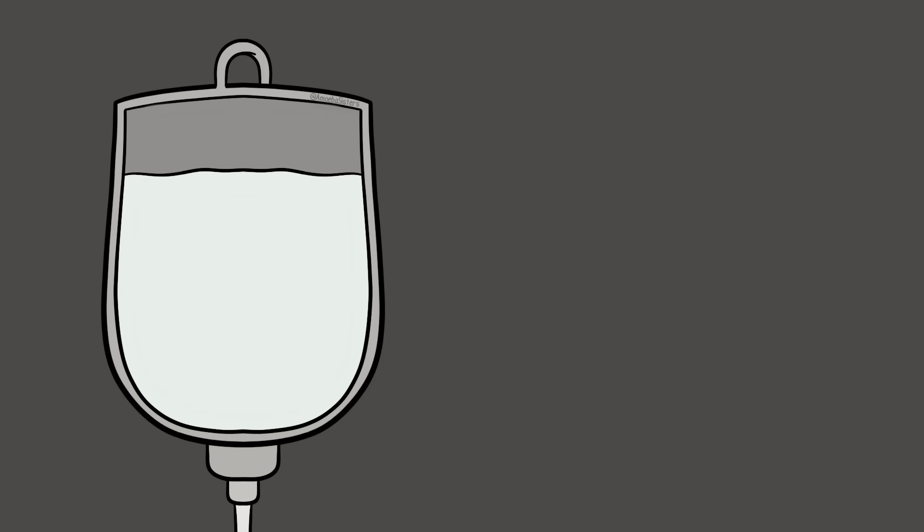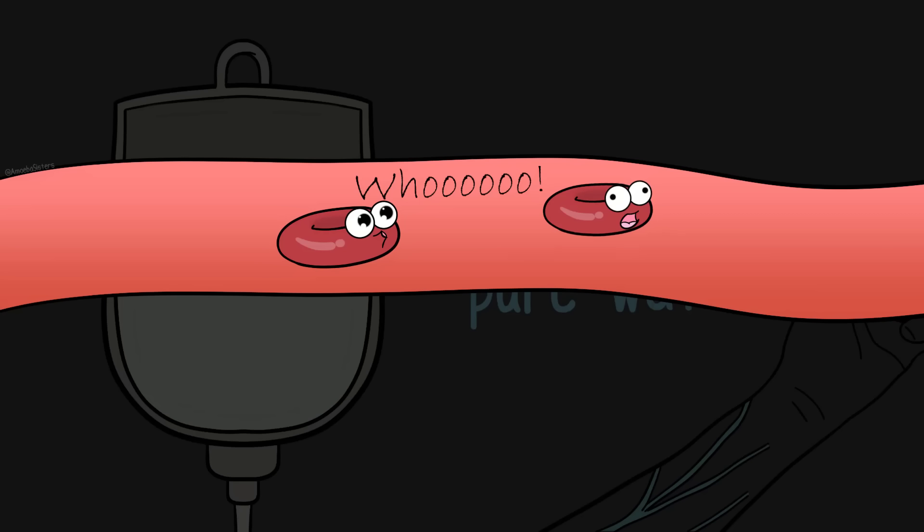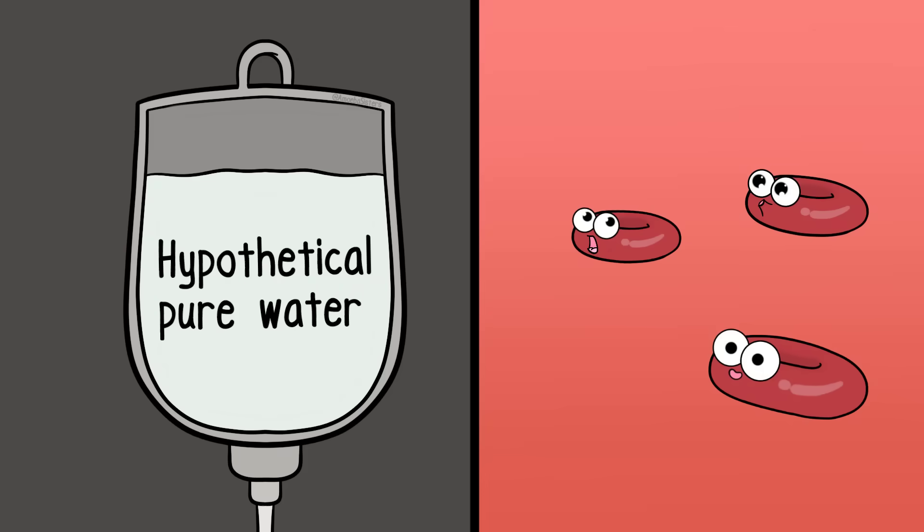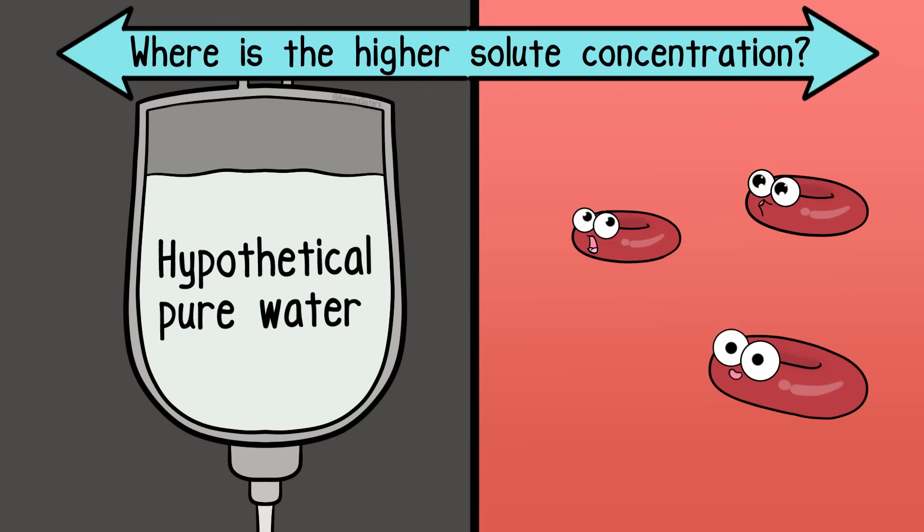Let's say hypothetically pure water was in an IV. Now an IV tube typically runs through a vein so that you have access to your bloodstream. Really useful for running medication through. Blood actually consists of many different types of components and red blood cells are a great example. So what do you think has a higher solute concentration? The hypothetical pure water in this IV tube? Or the red blood cells?